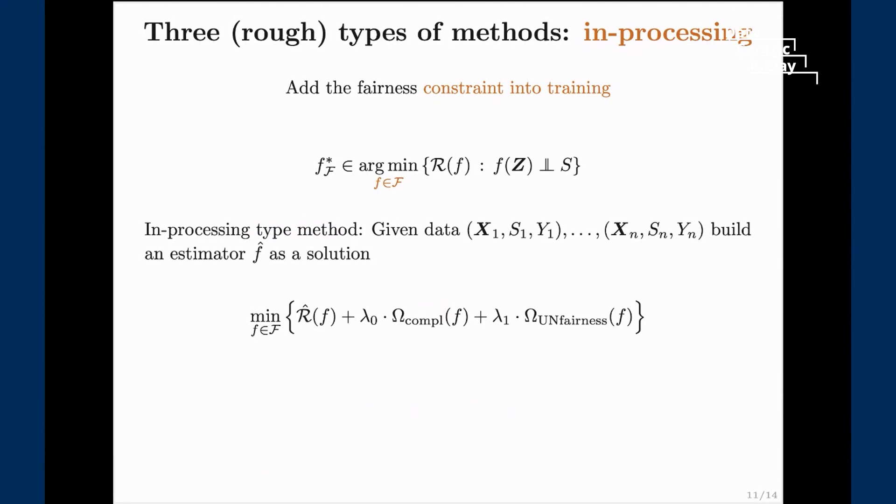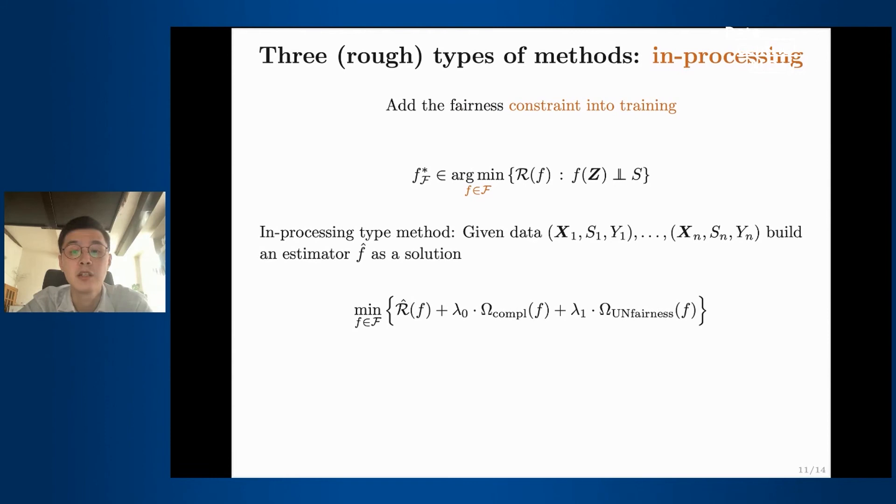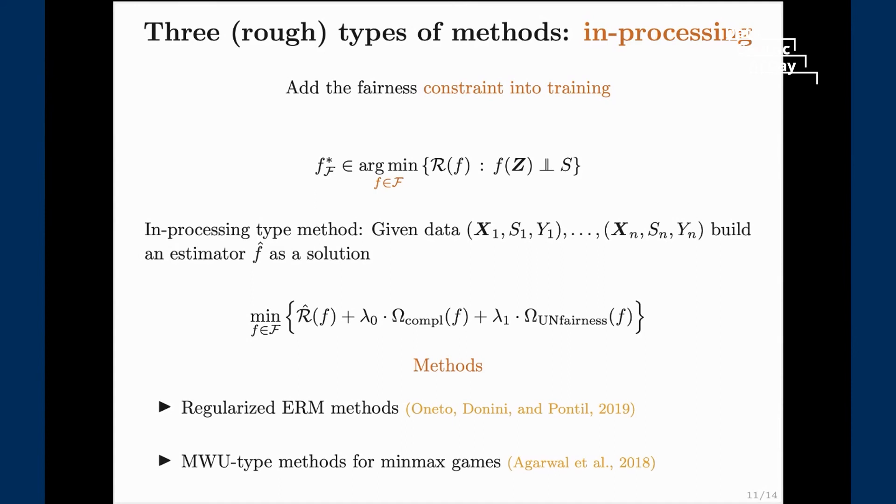The second approach is called in-processing. This somehow resembles standard machine learning idea where we are trying to minimize the risk, say empirical risk, with two penalties. The first one would be for the complexity of the model, so it can be a ridge type penalty, lasso type penalty, or anything else. We are trying to invent a second type of penalty which penalizes for unfairness. Then by tuning these two parameters lambda zero and lambda one we are trying to find a good compromise between model complexity, between fairness of our model and the accuracy. The approach is based on regularized empirical risk minimization, or if you consider this problem where you're minimizing risk under additional constraint you can think of it as a min-max game. In that case you can use something like multiplicative weight updates or exponential weight.